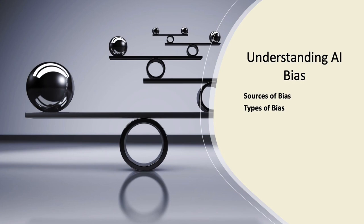Let's get a deeper understanding of bias in AI. First are the sources of bias. AI bias often originates from biased training data, biased algorithms, or a combination of both. Biases in data can arise from historical inequities or unrepresentative data samples.